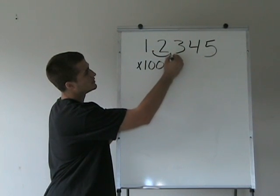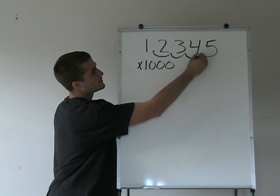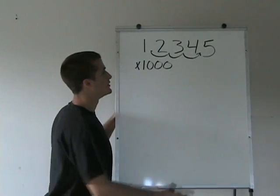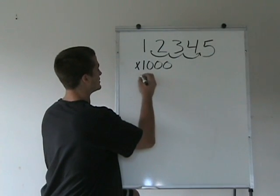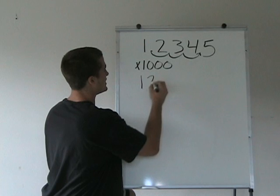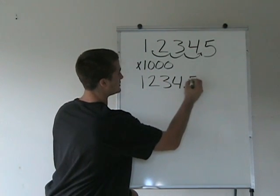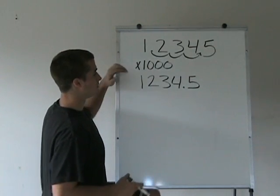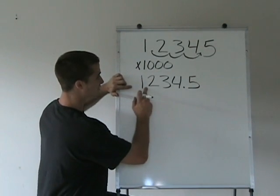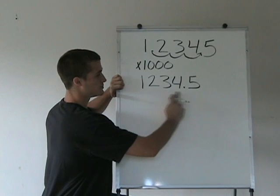So we're going to move this decimal over one, two, three places. And our new answer is going to be 1,234.5, because the decimal went from this place to this place, three spaces in between.